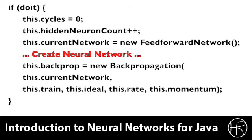If the doit variable has been set to true, then that means it's time to create a new neural network. We set the training cycles to zero. We are starting over because we're creating a new neural network. We increase the hidden count by one, and we create a new neural network.